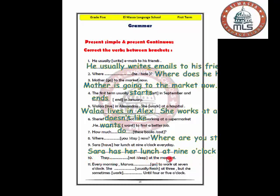Number ten: they not sleep at the moment. Again, present continuous. They, we use are plus not: aren't sleeping. They aren't sleeping at the moment. Every morning Marwa goes to work at seven o'clock. Present simple correct. Marwa goes to work at seven o'clock. She usually finishes, we add es, but she sometimes works until four or five o'clock.